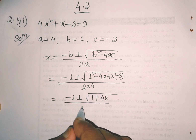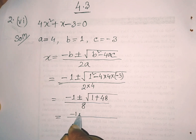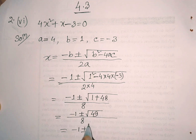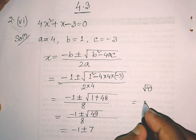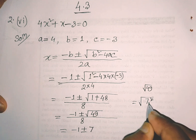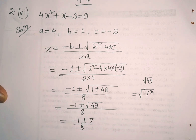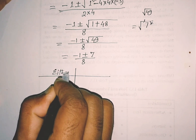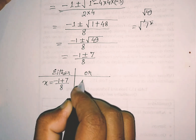So we get root over 49. Root 49 — as we all know — can be written as 7, because the square root of 49 is 7.